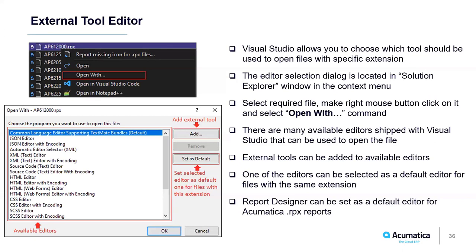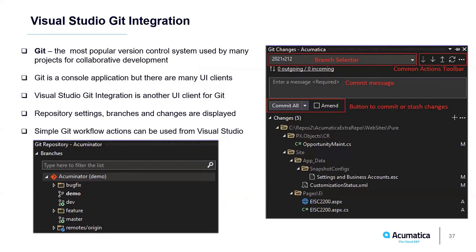Now let's look at Visual Studio Git integration. Version control systems are a crucial part of modern collaborative software development, and Git is currently the most popular tool. Visual Studio Git integration is a UI client for Git. It can show local and remote branches, staged and unstaged changes, repository settings, branch history, and more. You can perform standard actions like pull, push, merge, create new branches, and stash changes. I find it convenient because I don't need to switch from Visual Studio to another tool for Git-related work, and it is very convenient to see file comparisons directly in Visual Studio.